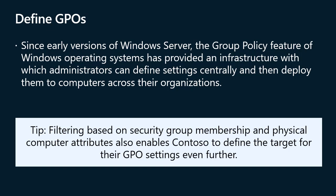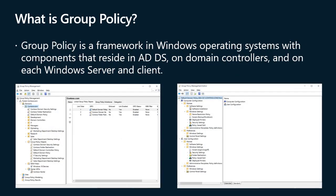You define group policy settings within a group policy object (GPO). A GPO is an object that contains one or more policy settings that apply to one or more configuration settings for a user or a computer. Group policy is a powerful administrative tool. You can use GPOs to push various settings to a large number of users and computers, and because you can apply them to different levels, from the local computer to domain, you can focus these settings precisely.